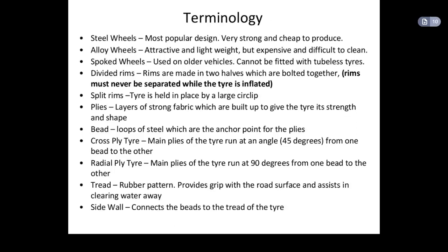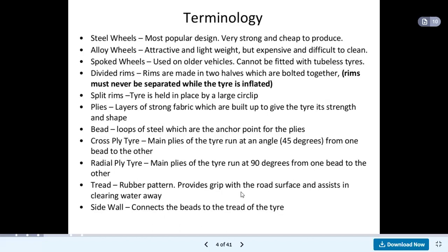Looking at the terminology: steel wheels — the most popular design, very strong and cheap to produce. Alloy wheels are attractive and lightweight, but expensive and difficult to clean. Spoke wheels are also available, used on older vehicles and cannot be fitted with tubeless tyres. Divided rims are made in two halves bolted together, and rims must never be separated while the tyre is inflated. Split rims hold the tyre in place by larger clips. Plies are the layers of strong fabric built up to give the tyre its strength and shape. The bead consists of loops of steel which are the anchor point for the plies. Cross ply tyres and radial ply tyres are available. Tread rubber patterns provide grip with the road surface and assist in clearing water away. The sidewall connects the beads to the tread of the tyre.